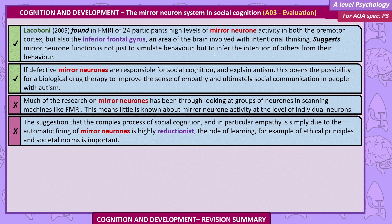Evaluations. Iacoboni (2005) found in an fMRI of 24 participants high levels of mirror neuron activity in both the premotor cortex and the inferior frontal gyrus — an area of the brain involved with intentional thinking — suggesting mirror neuron function is not just to simulate behaviour but to infer the intention of others from their behaviour. If defective mirror neurons are responsible for social cognition and explain autism, this opens a possibility for biological drug therapy to improve the sense of empathy and social communication in people with autism. However, much of the research on mirror neurons has been through looking at groups of neurons in scanning machines like fMRI, so little is known about mirror neuron activity at the level of individual neurons. The suggestion that complex processes of social cognition and empathy are simply due to the automatic firing of mirror neurons is highly reductionist, as the role of learning, ethical principles, and societal norms is also important.